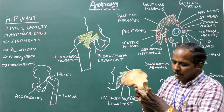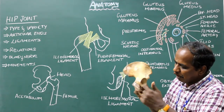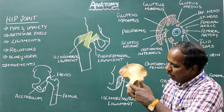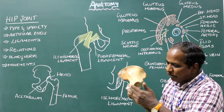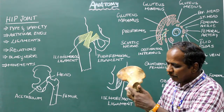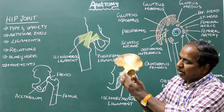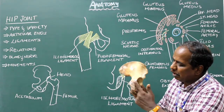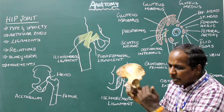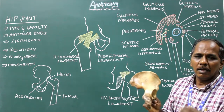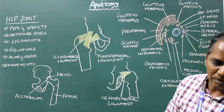Ischiofemoral ligament. It is attached posteriorly and medially to the acetabulum, or superolateral to the ischial tuberosity on the body of the ischium. Distally, it runs obliquely and spirally and blends with the capsule.